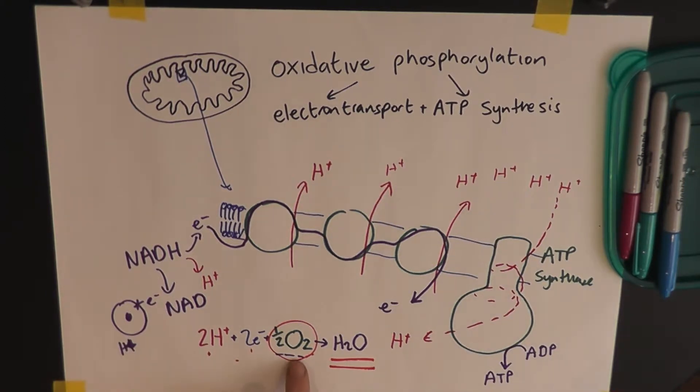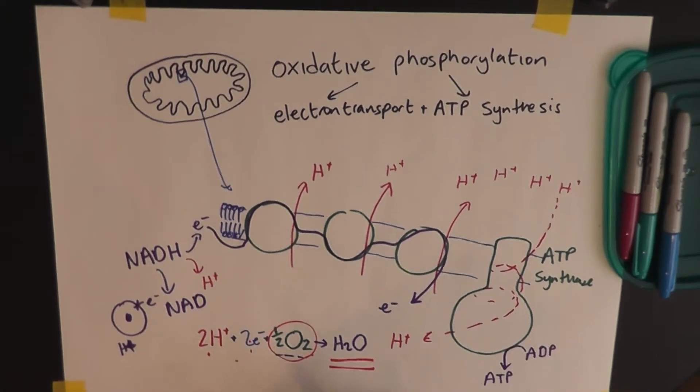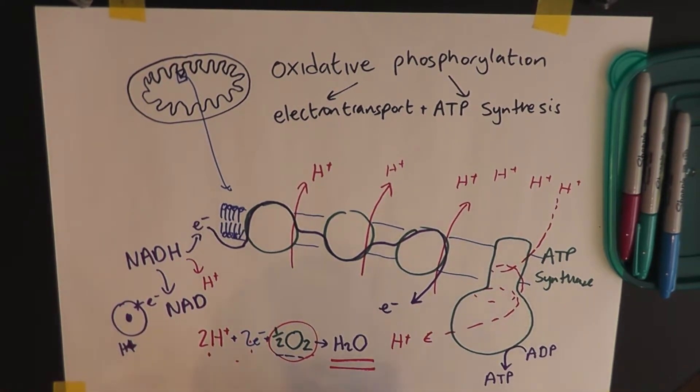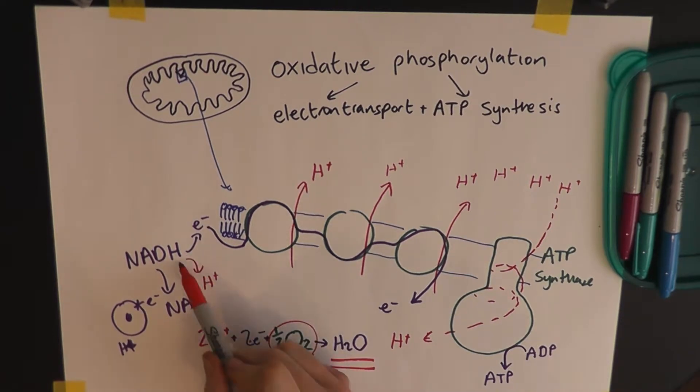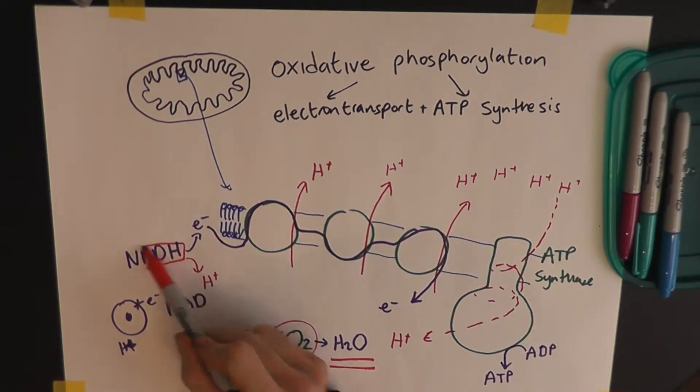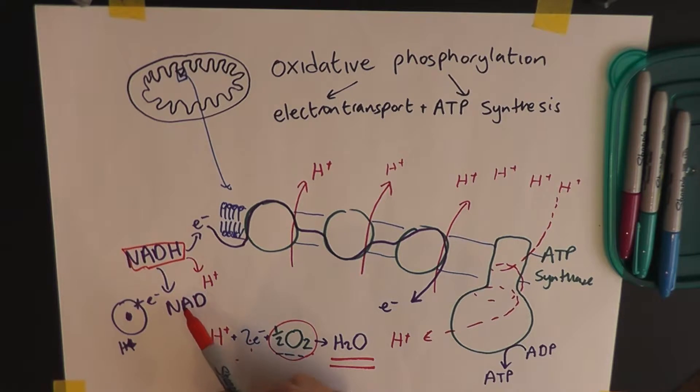If we can't get enough oxygen, however, we've got a problem in that. And that problem is that this hydrogen and these electrons don't have anywhere to go. And because they don't have anywhere to go, that means that this NADH does not get converted into empty NAD.